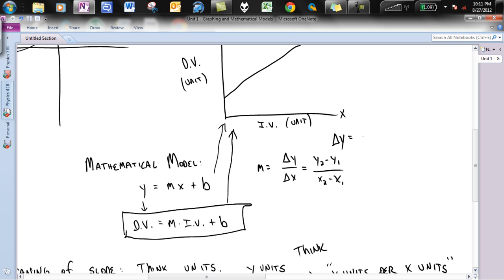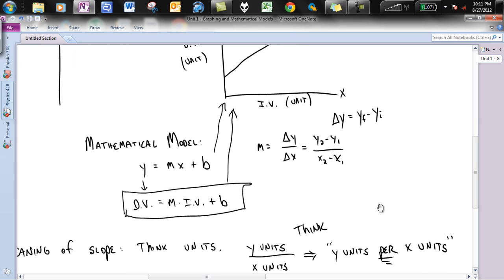So, in this case, you will see delta y is going to be what you can call yf minus y initial. That is all that little triangle in front of a letter means. It is just a change. So, that is why you see y2 minus y1 and x2 minus x1. So, that is our mathematical model.